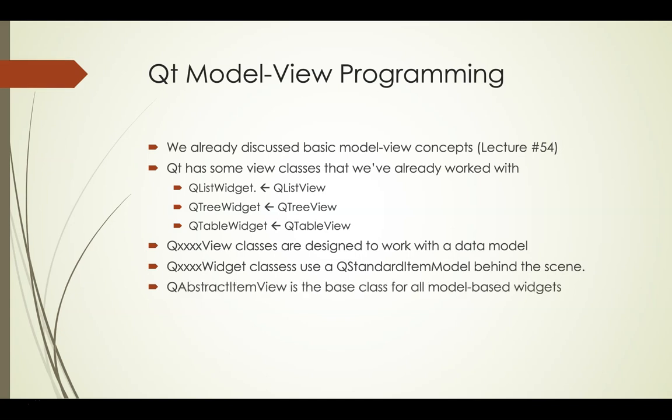The QAbstractItemView class is the base class for all model-based widgets. These again are the ones that end with the word View. The QAbstractItemView class has a setModel method that you use to specify the model to use with this view widget. And it has some signals as well, such as the activated, clicked, and double-clicked signals.